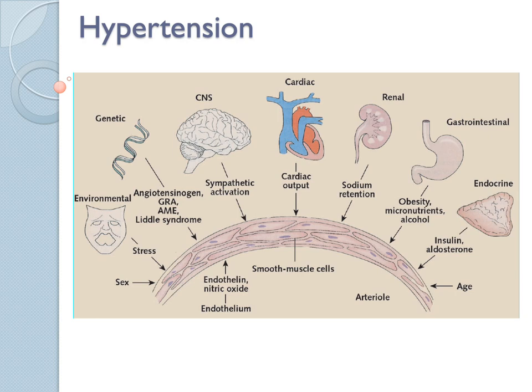This picture summarizes all the possible contributing factors, like stress — obviously when you're stressed, your pressure goes up — and genetically as well, and your sympathetic activation, which links to increased heartbeat. Also sodium retention, which shows the importance of renal contribution, where drugs act. And also obesity and alcohol indirectly increase the pressure, along with endocrine contributions. With old age, elasticity is lost.